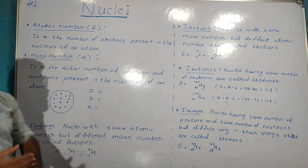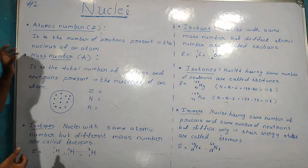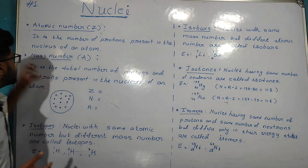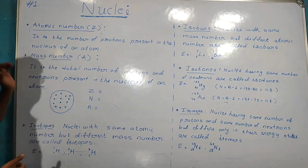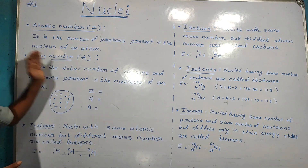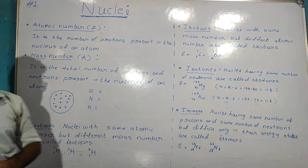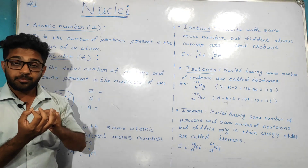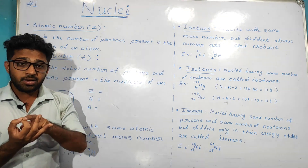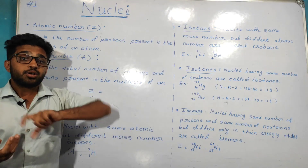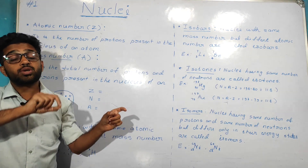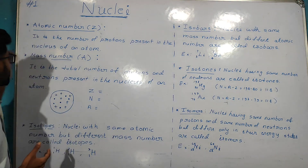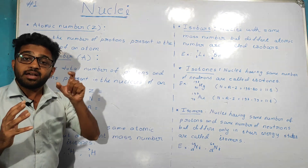The mass number is the next main concept. The mass number is denoted by A. The nucleus of an atom contains protons and neutrons. So the mass number is the total number of protons plus the total number of neutrons present in the nucleus.